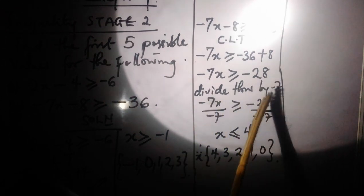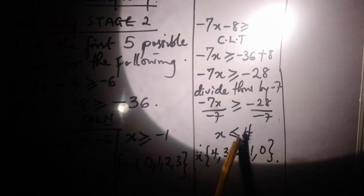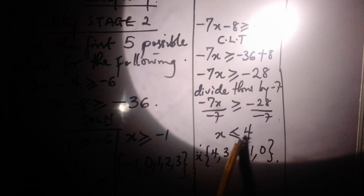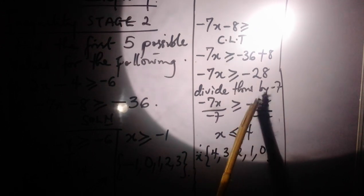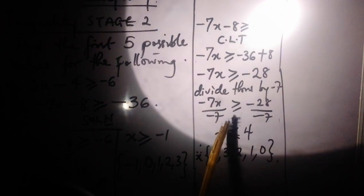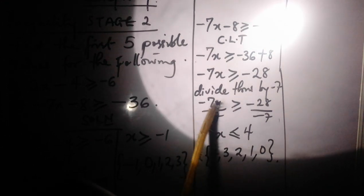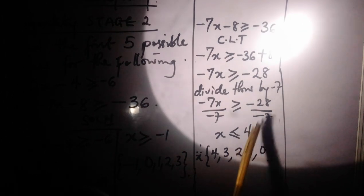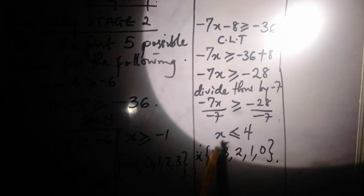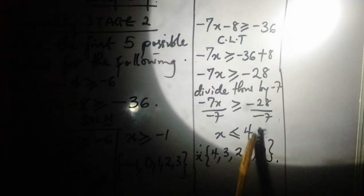Divide through by -7. You have x is less than or equal to 4. Why did I change this sign? Remember, whenever you divide by a negative coefficient of x, your sign must change.